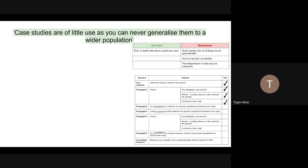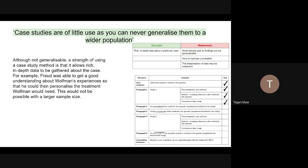So now we're going to move on to evaluating it. The whole time we're going to try and link it back to that stem and also to the study. Although not generalisable, a strength of using a case study method is that it allows rich in-depth data to be gathered about the case. For example, Freud was able to get a good understanding about Wolfman's experiences so that he could then personalise the treatment Wolfman would need. This would not be possible with a larger sample. So we're now here showing that we're disagreeing with that original statement and that there is some use to case studies because it can personalise the treatment for Wolfman, which you cannot do necessarily with a larger sample. So an advantage of a case study.